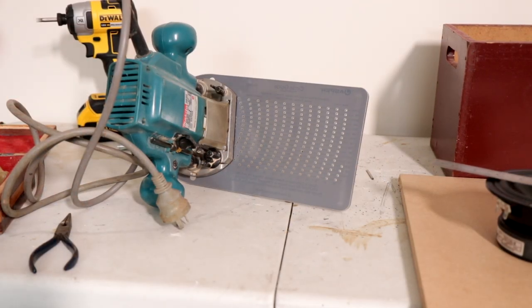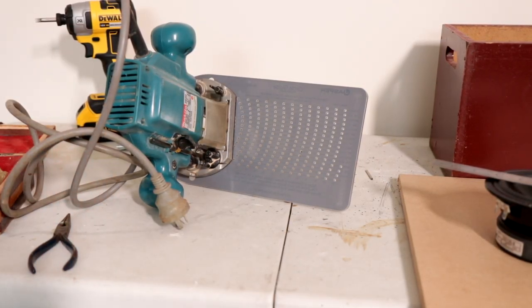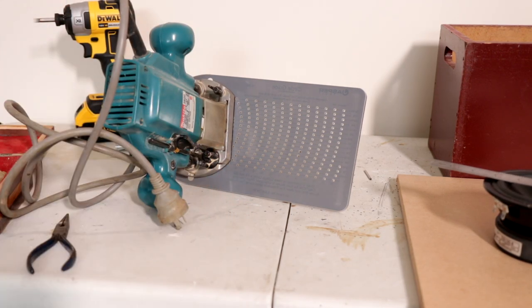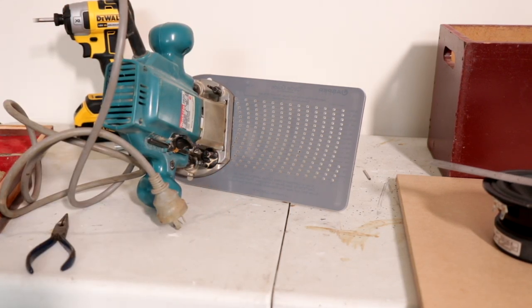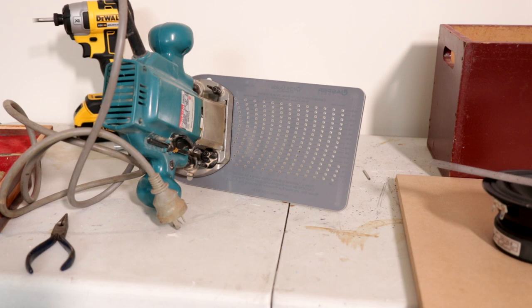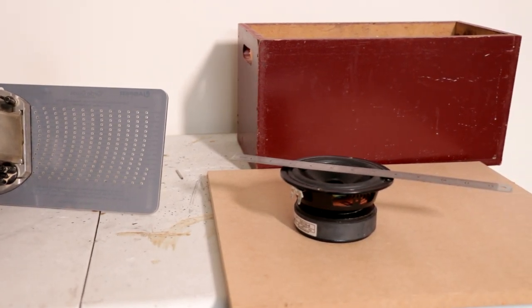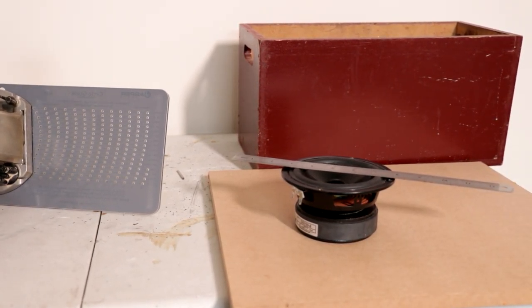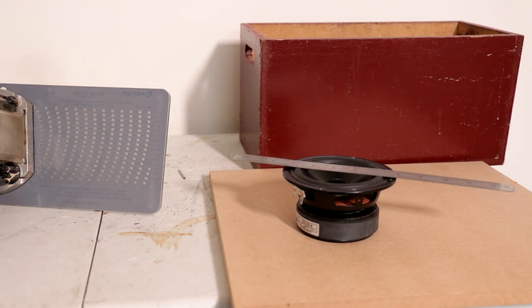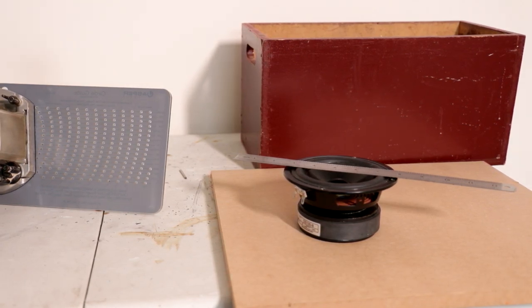So what I'll be using in today's video is this Makita router. It can be any sort of router, it doesn't matter. A Jasper circle jig can be bought at Parts Express, and I'll link everything I'm using in today's video in the video description, so you can go and pick it up for yourself. And as well as that, we're obviously going to need some sort of speaker driver. I've chosen a classic series 5-inch woofer, because I just have one laying around.